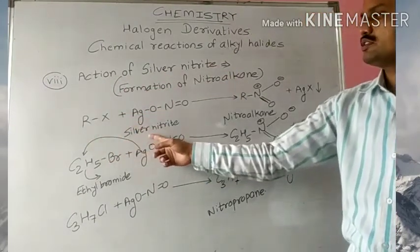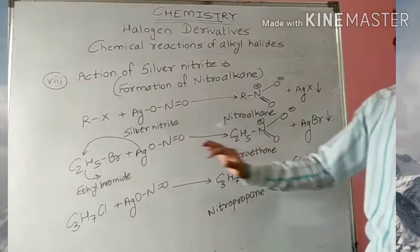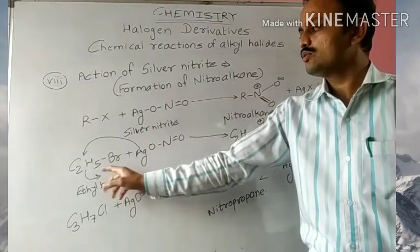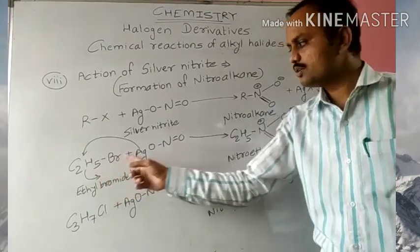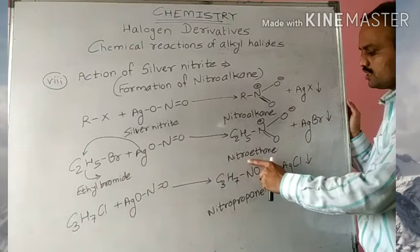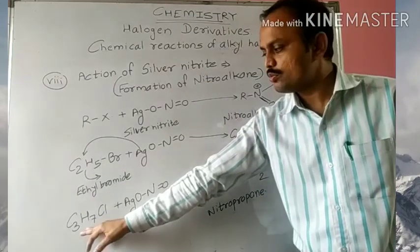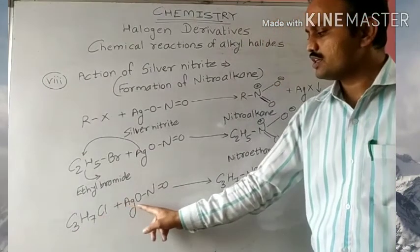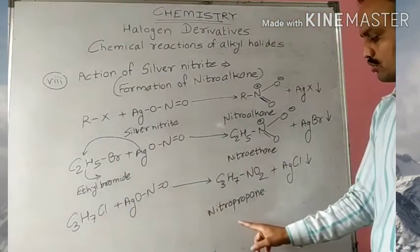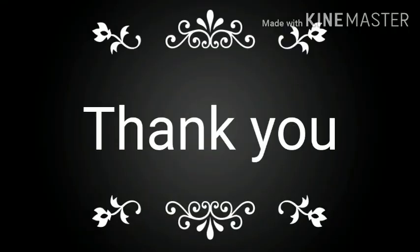So, action of silver nitrite: RX plus silver nitrite gives nitroalkane plus AgX. In our first example, we had ethyl bromide plus silver nitrite — the product was nitroethane plus AgBr. In the second example, it was propyl chloride plus silver nitrite — the product was nitropropane plus AgCl.